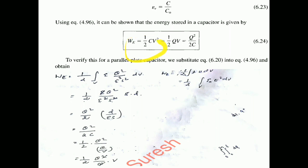Here C equals Q divided by V. Substituting gives W_E equals one-half Q V, which also equals Q squared divided by 2C. We now verify this using the energy density formula.